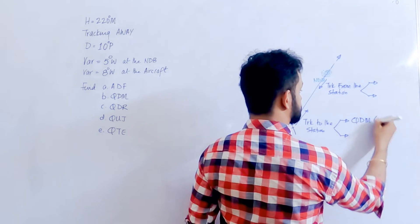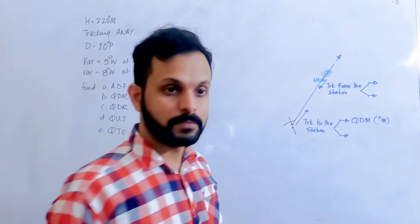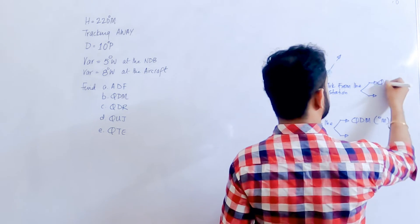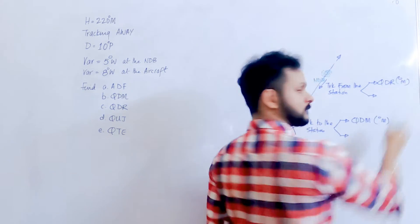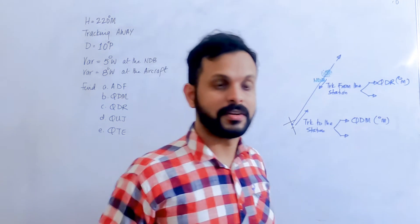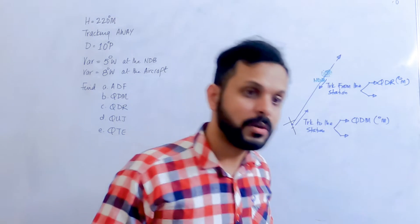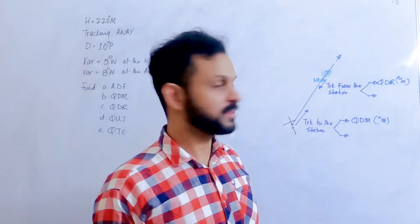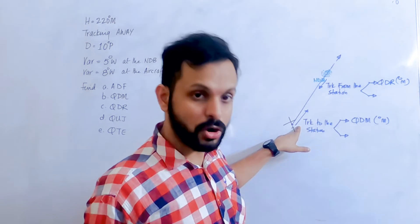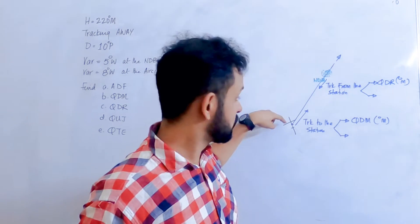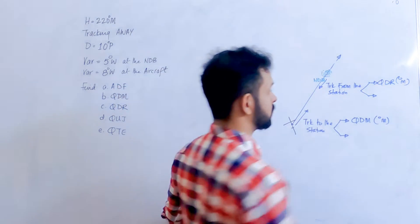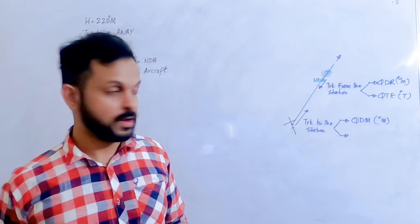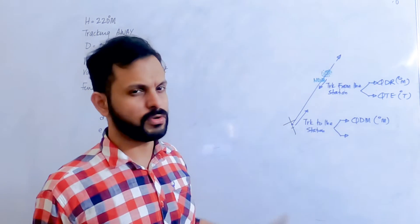Depending on whether it's true or magnetic, the Q-code changes. For tracking you largely need magnetic tracks. The magnetic track to the station is QDM. The opposite — the magnetic track from the station — is QDR. For plotting, if you want the true track from the station to the aircraft, that is QT.